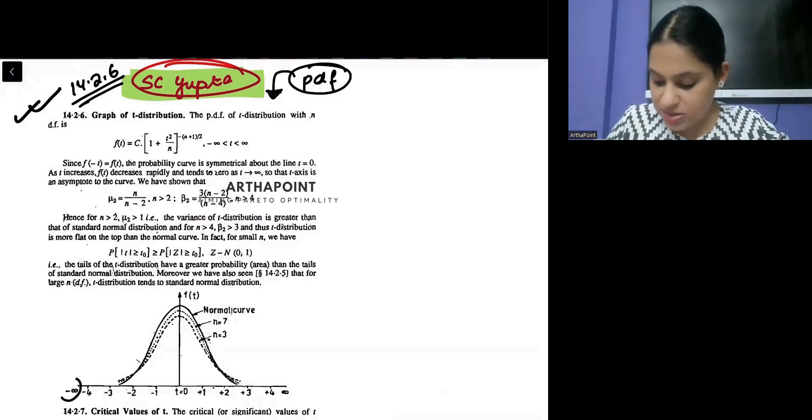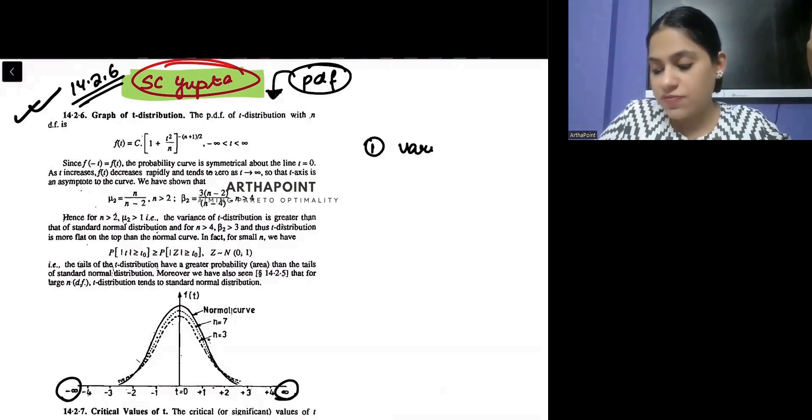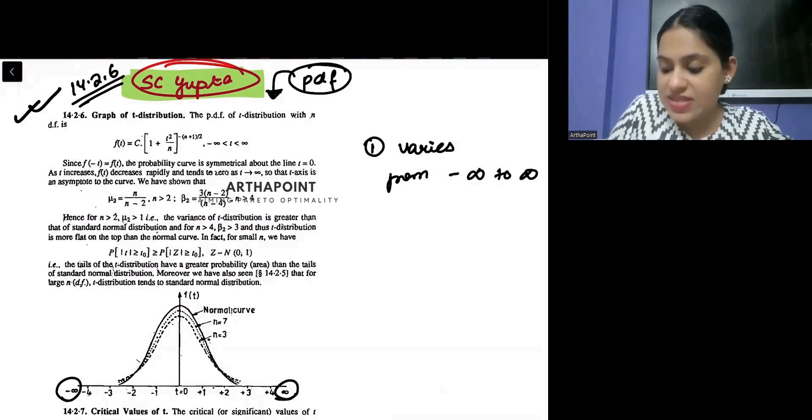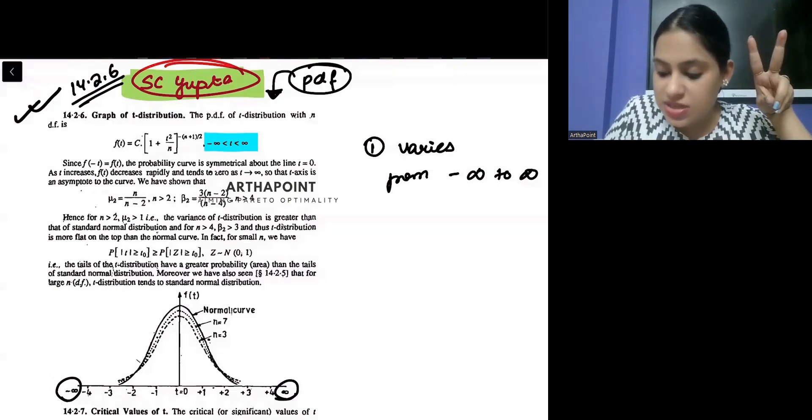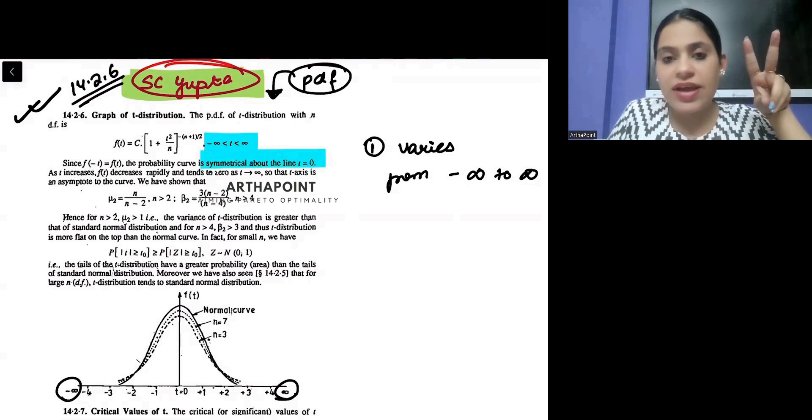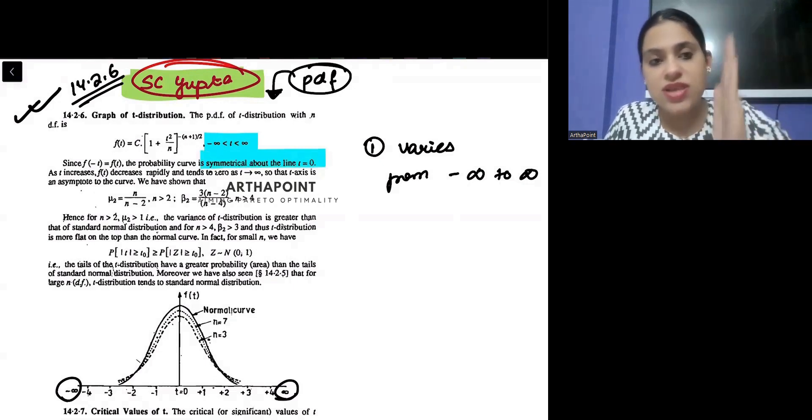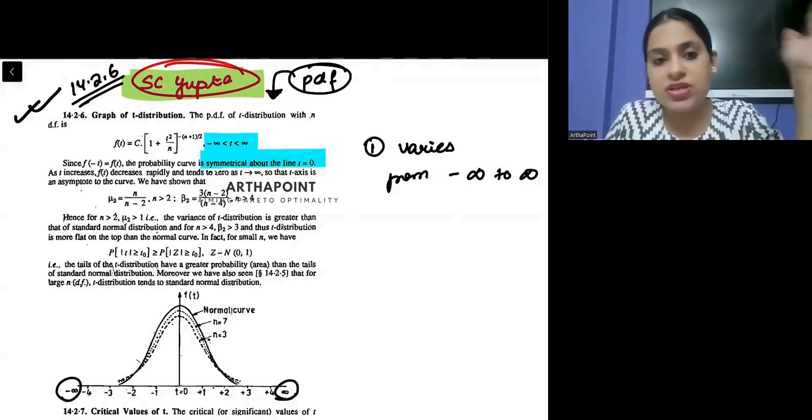So, it is showing that it is varying from minus infinity to infinity. So, it varies from minus infinity to infinity. And that is exactly what is mentioned here. It goes from minus infinity to infinity. So, that is the correct statement. Secondly, it says it is symmetrical along the line T equal to 0. So, this is actually its mean along with it is symmetrical.